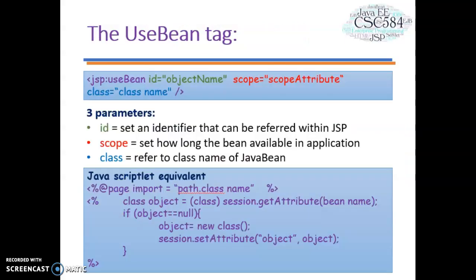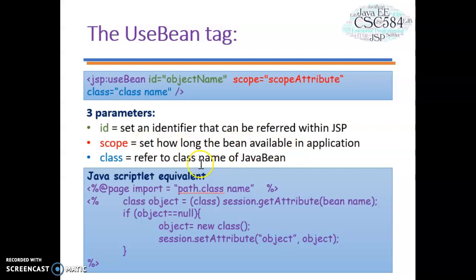Let's look in detail at the useBean tag. The useBean tag action declares a Java Bean for use in a JSP. Once declared, the bean becomes a scripting variable accessible by both scripting elements and other custom tags in the JSP. It has three parameters: ID, which sets an identifier that can be referred to within the JSP; scope, which sets how long the bean is available in the application; and class, which refers to the class name of the Java Bean.